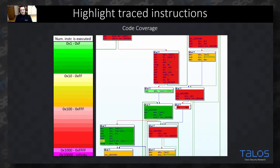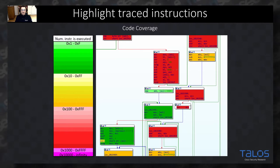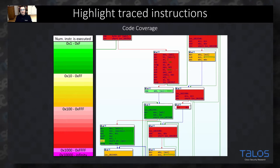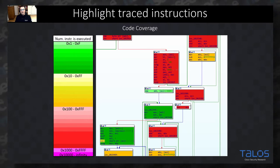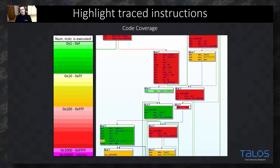Since DDR is instrumenting almost every single instruction of the executable, depending on what command you pick, you can also easily use it for code coverage. DDR not only marks the instructions that were executed, it also marks them with a color depending on how often they were executed. A light green instruction was executed once; a dark red or warmer color means it was executed many more times. This helps you find crypto routines that often loop through the same basic blocks.